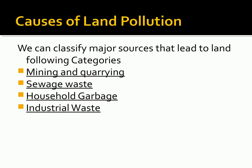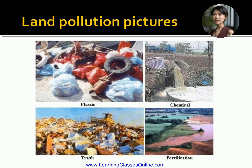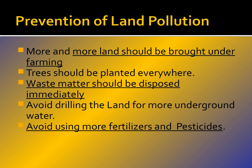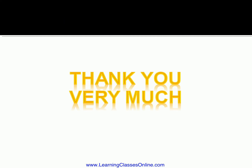Causes of land pollution include mining and quarrying, sewage, household garbage, and industrial waste. To prevent land pollution: more land should be brought under farming, trees should be planted everywhere, waste matter should be disposed of immediately, avoid drilling the land for underground water, and avoid using excessive fertilizers and pesticides.